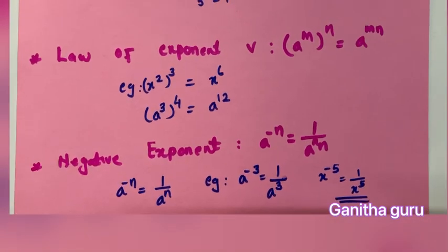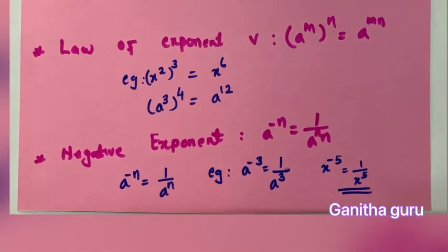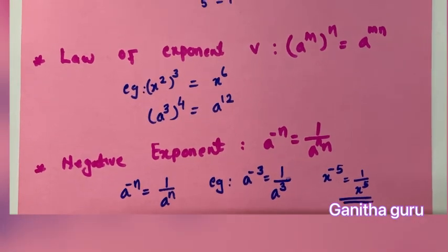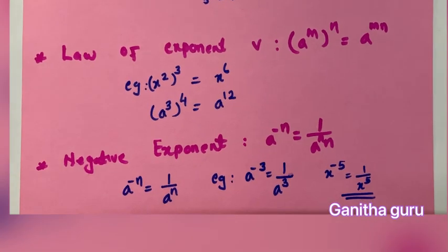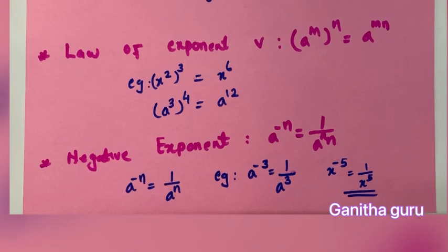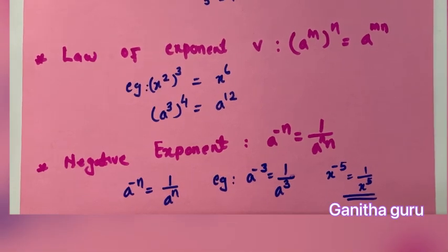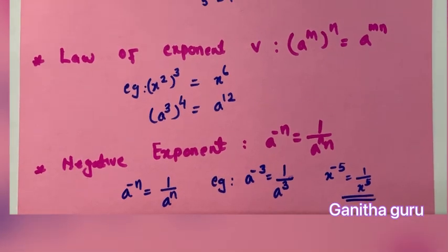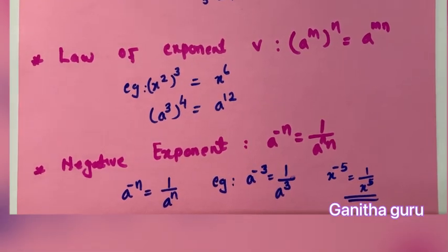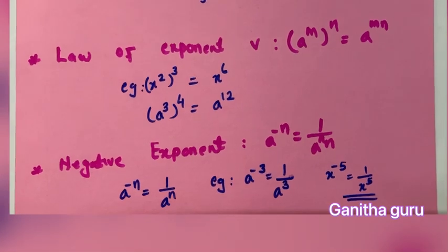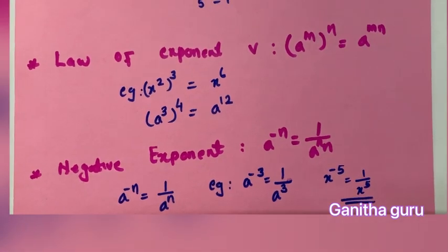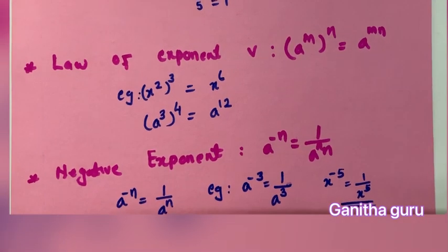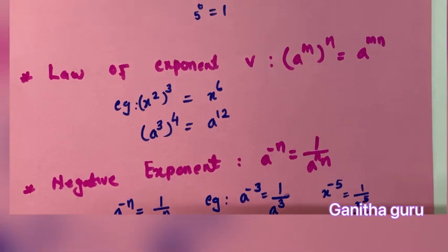The next law is power of a power: a raised to m, whole raised to n. This is called the power of power — when one number has two exponents. We will multiply the powers, giving a raised to m into n.